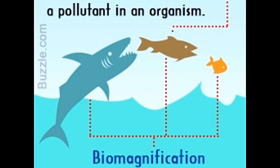Biomagnification refers to the increase in concentration of pollutants as they move from one trophic level to the next. An apt example is when small fish eat contaminated microscopic organisms, and big fish eat the small fish. The pollutants are transferred from microscopic organisms to the small fish, and then to the big fish. As the burden of pollutants is passed from one organism to another, it gets amplified, and thus biomagnification is also known as bioamplification.